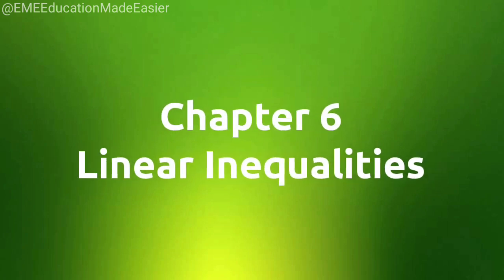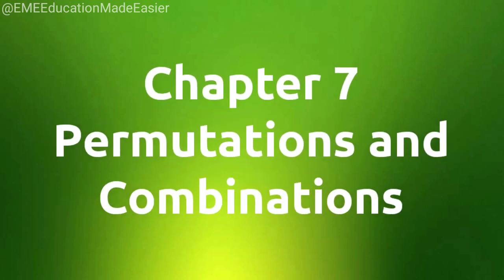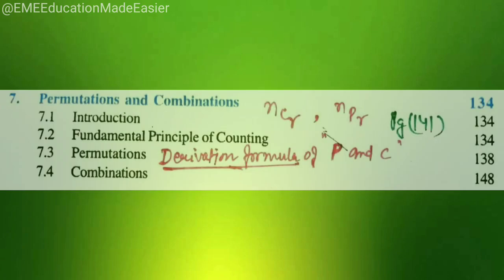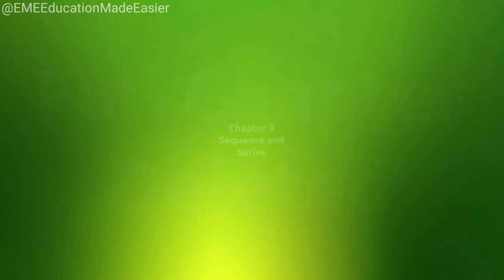Now, coming to chapter number 6, linear inequalities, no deletion. Full chapter is coming. And from chapter number 7, permutation and combinations, all the derivation formula of PNC, that is NCR and NPR from page number 141 has been deleted. And from chapter number 8, binomial theorem, full chapter deleted.